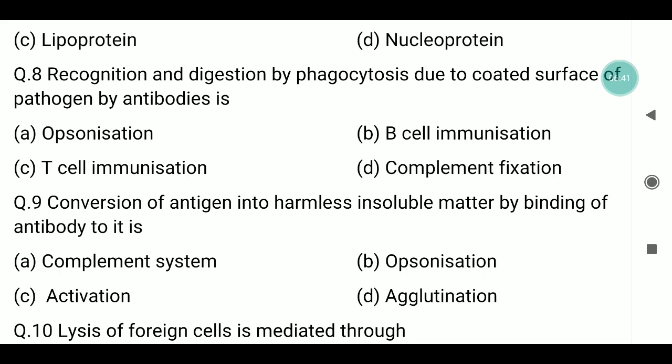Question number nine: conversion of antigen into harmless insoluble matter by binding of antibody to the antigen — destroying and converting it from harmful to harmless insoluble matter — this is called agglutination.